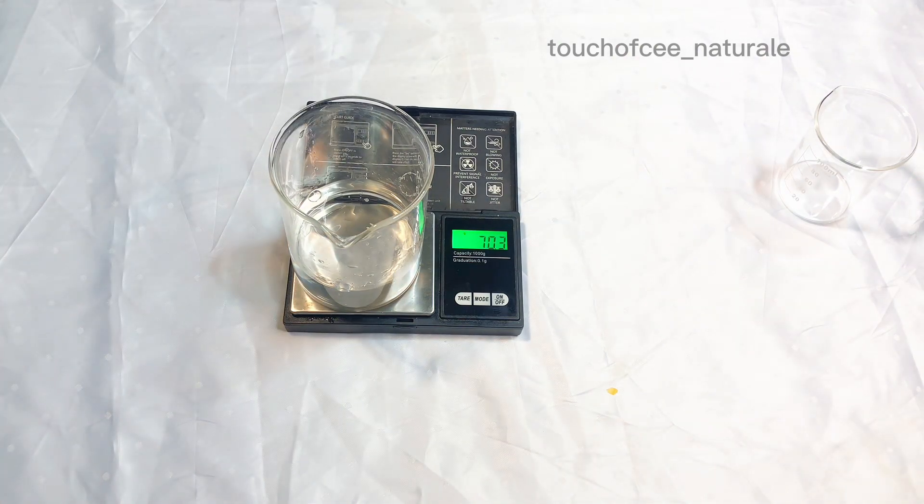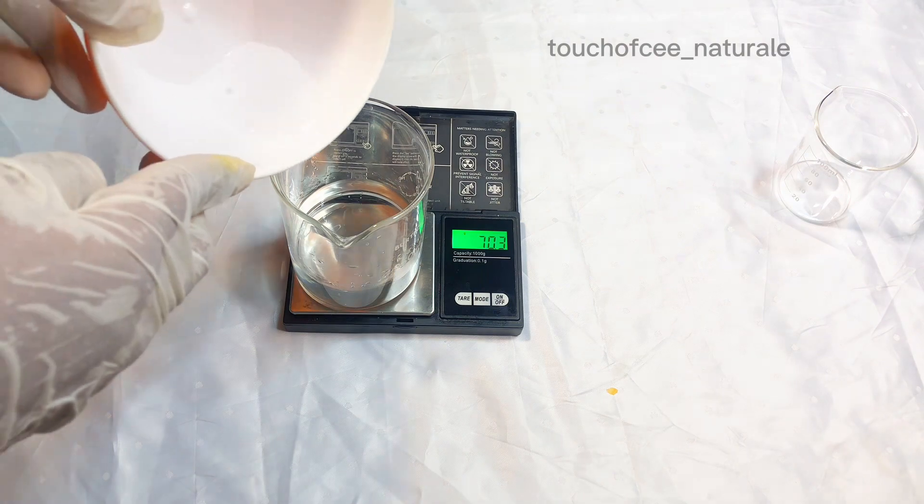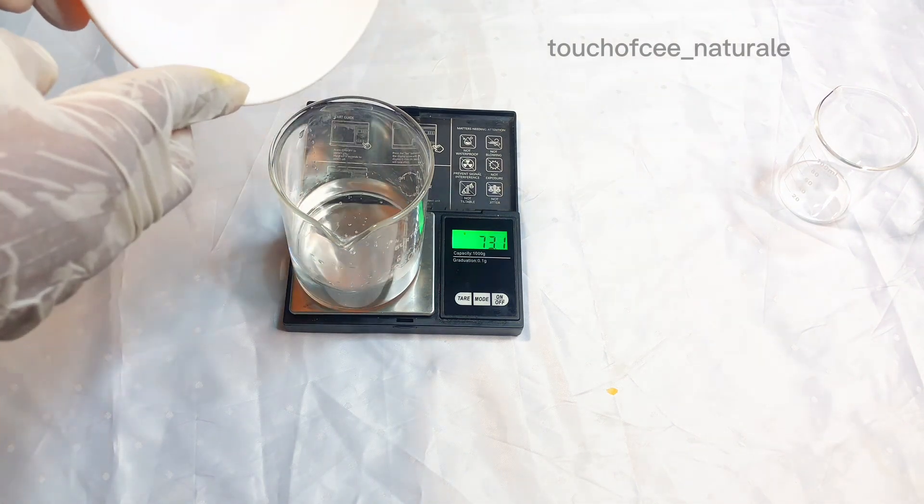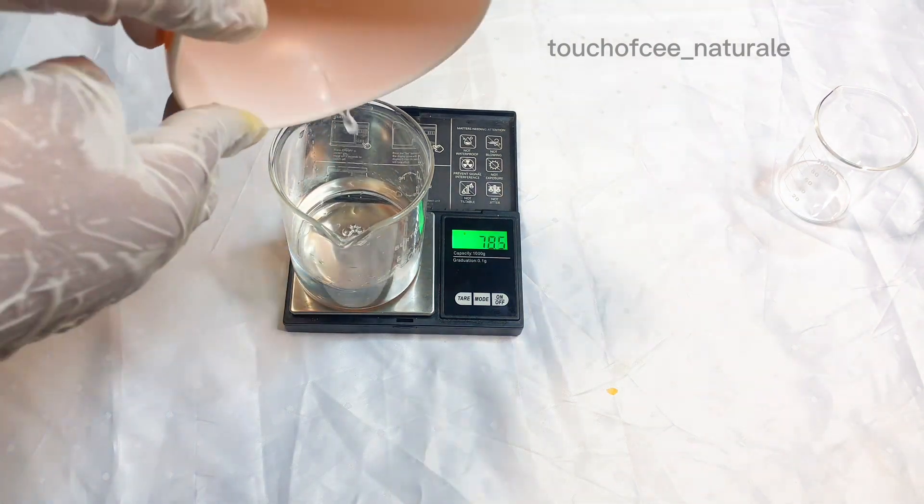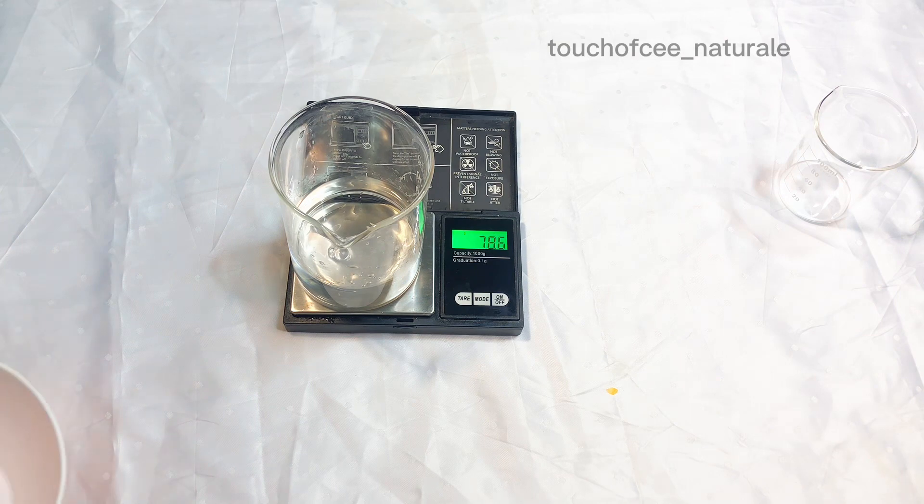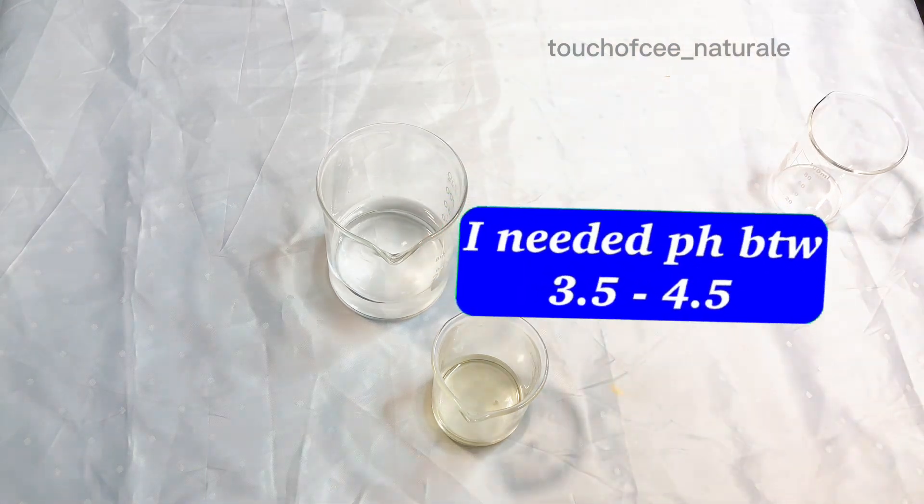I'm using the sodium hydroxide to buffer the pH so that my pH is not going to be something so high or something so crazy. For this formulation I'm going with a final pH of 3.5 to 4.5, any pH in between is good.